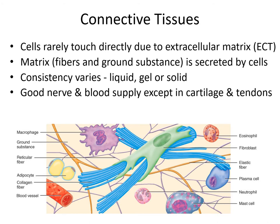The consistency of the extracellular matrix is quite different in different tissues. It may be rather rigid in some tissues — bone and cartilage, for instance. It can be gel-like and allow for a lot of movement in loose connective tissues. Or connective tissue can be entirely liquid — so blood is a connective tissue. Connective tissues tend to have very good nerve and blood supply, with a notable exception being cartilage and tendons.